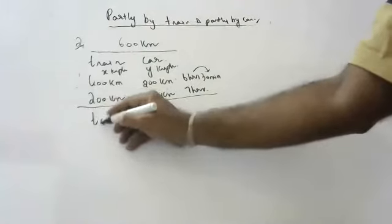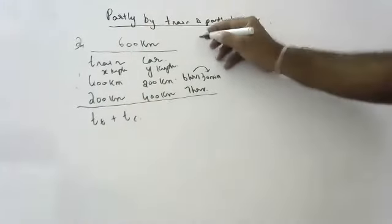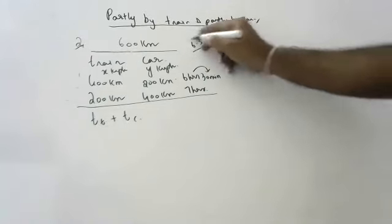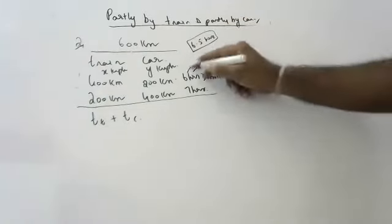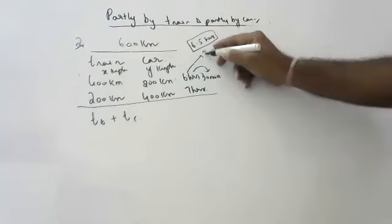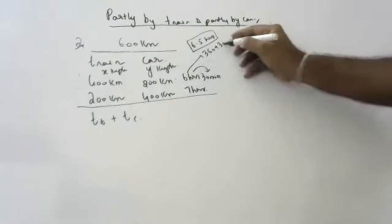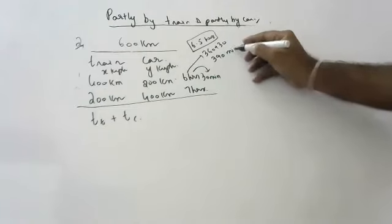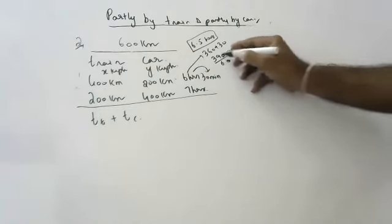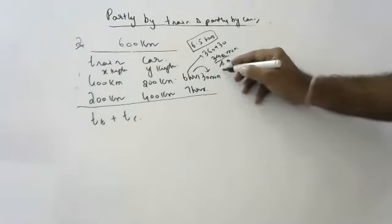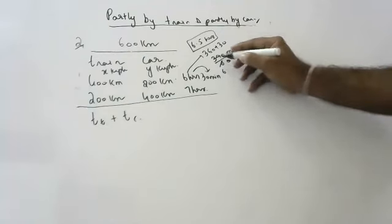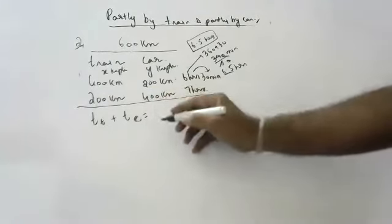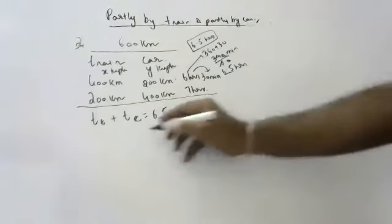First case: time of train plus time of car equals 6 hours 30 minutes equals 6.5 hours. 6 hours 30 minutes equals 390 minutes divided by 60 equals 6.5 hours. Second case: time of train plus time of car equals 7 hours.